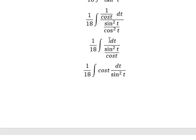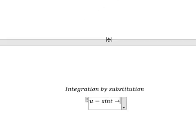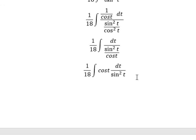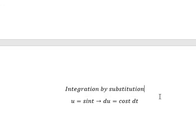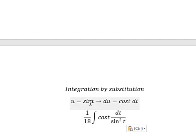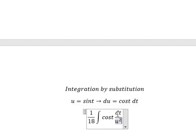So I will put u equals to sin t. Then we do first derivative for both sides. We have cos t dt. So sin t square, we change by u, you got u square. Cos sin t dt, we change by du. The integration of this one, we have negative 1 over 18 u.